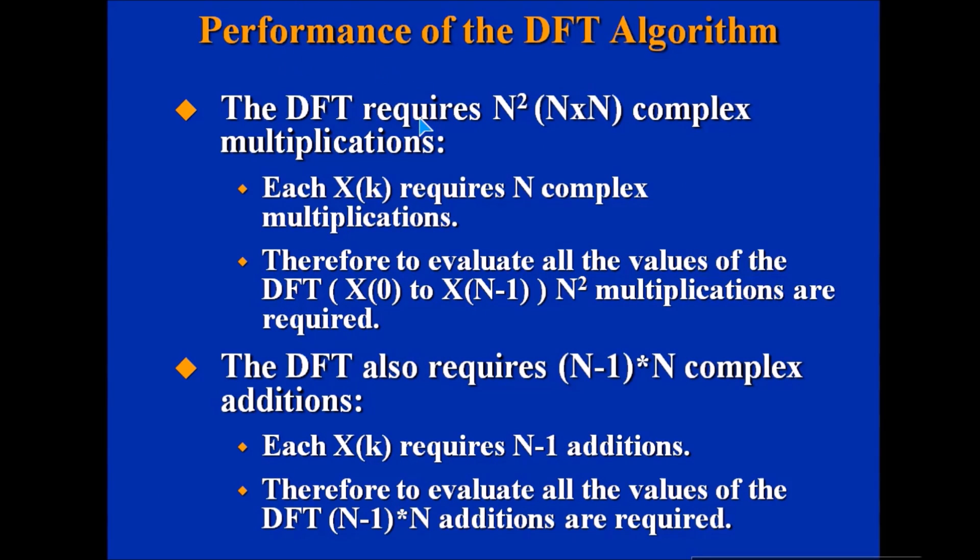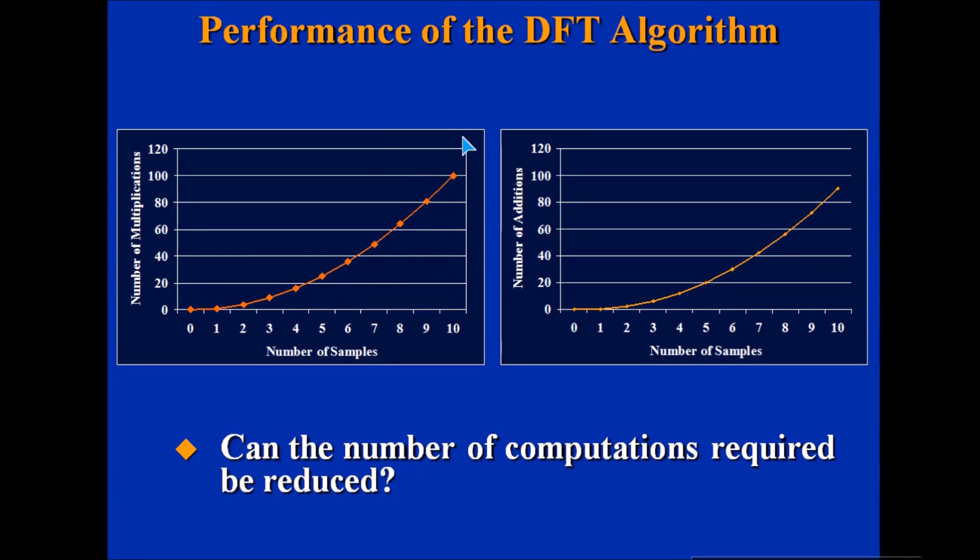The performance of DFT: DFT requires N² (N×N) complex multiplications. Each X(k) requires N complex multiplications, so to evaluate all values of the DFT from 0 to N-1, we require N² multiplications. Similarly, the DFT also requires (N-1)×N complex additions. Each X(k) requires N-1 additions, so to evaluate all values of the DFT, we require (N-1)×N additions.